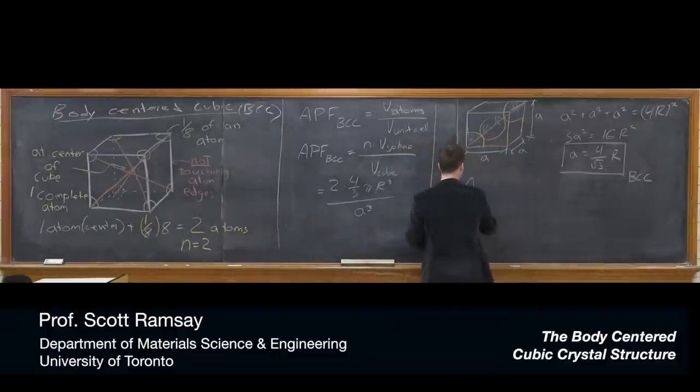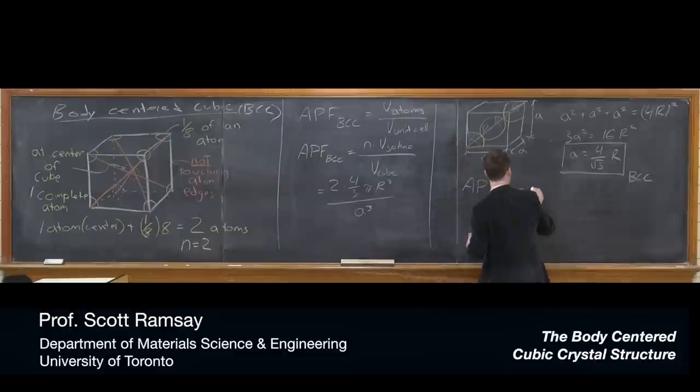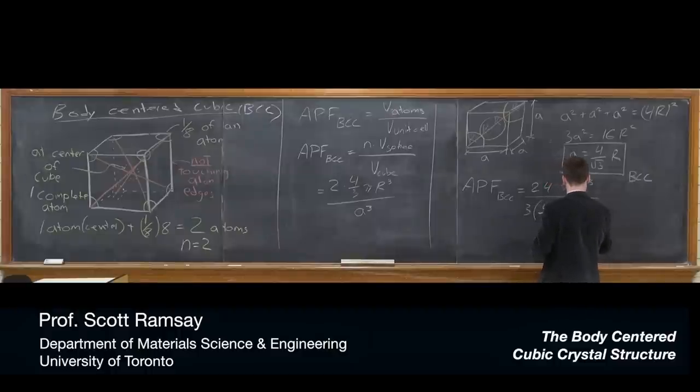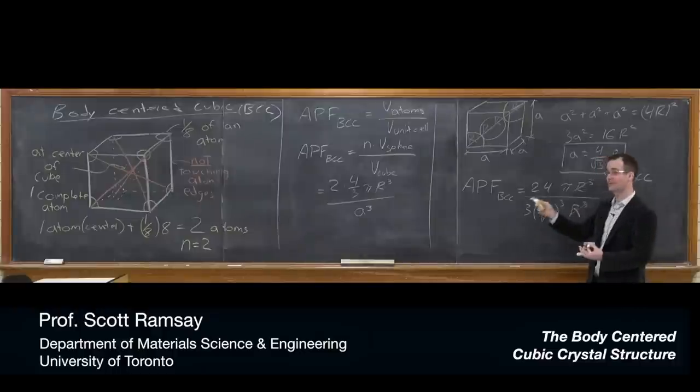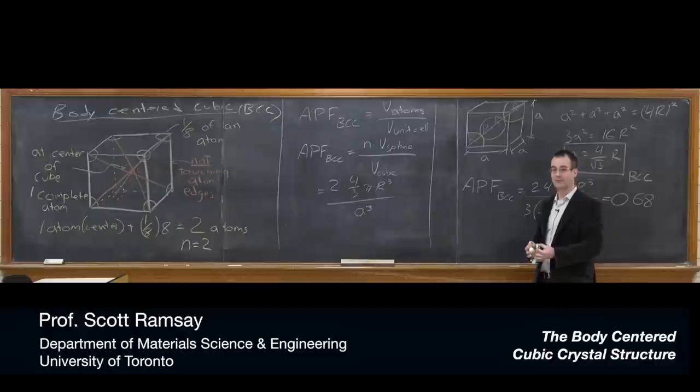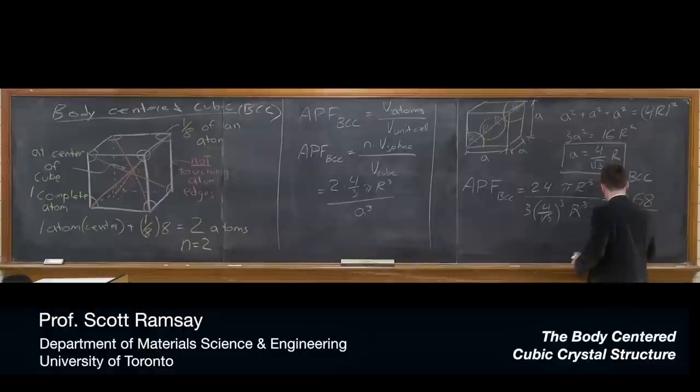Now if we substitute that into our atomic packing fraction calculation, we've got 2 times 4 pi r³ over 3 times (4/√3)³ r³. We can cancel out the r³—atomic packing fraction is independent of radius. And if you do some massaging on those numbers, you're going to come up with 0.68. If you compare that to the atomic packing fraction for FCC, you'll realize it's less. So this is not close packed.